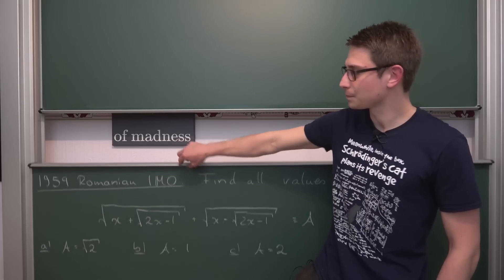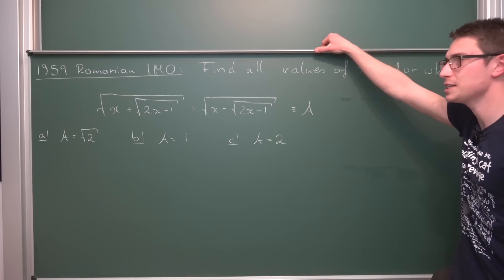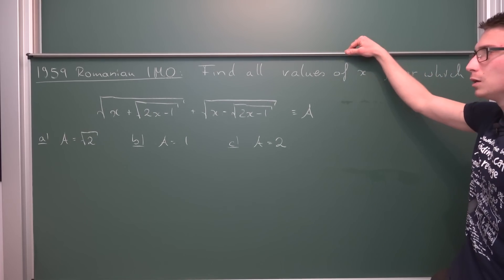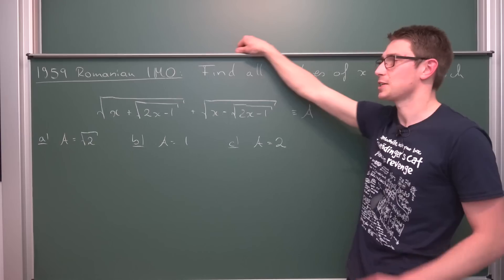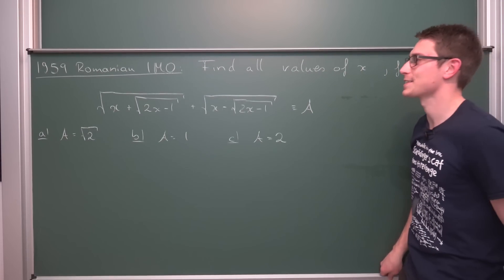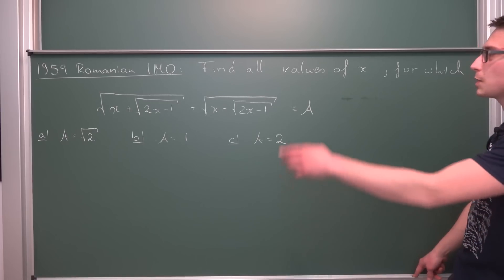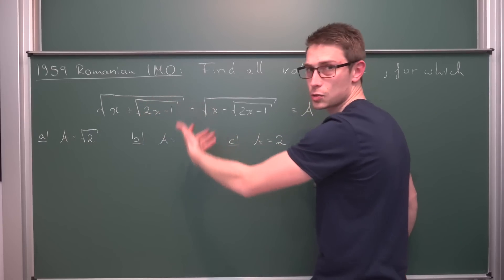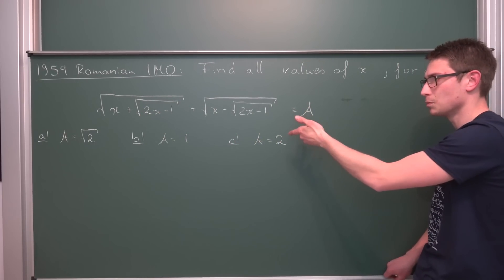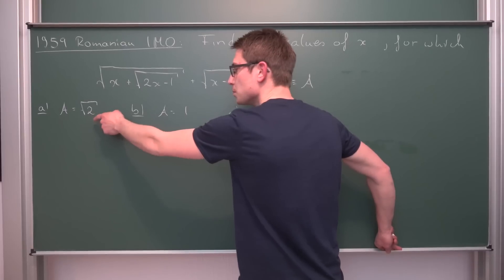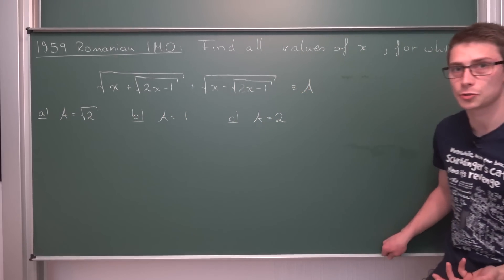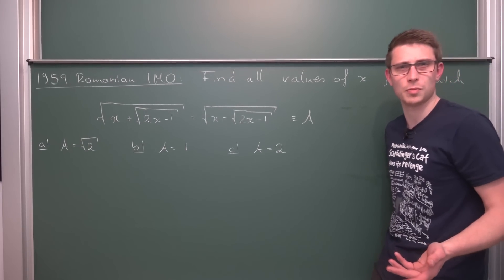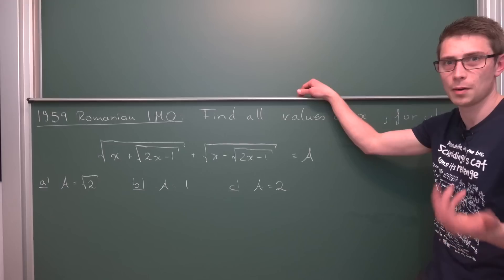Today, another one from the IMO — this time the 1959 Romanian IMO. We're going all around the world as you might have noticed in the last few weeks. What we are asked to do is find all the values of x for which this addition of nested square root things is equal to: part a) the square root of 2, part b) 1, or part c) 2. It's a very fun problem which really doesn't involve too much calculus at all — nearly none. More algebra.